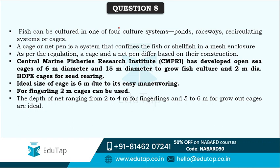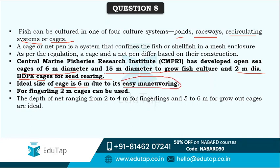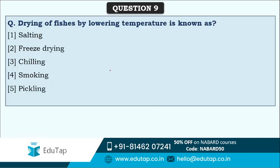Fish can be cultured in one of four culture systems: ponds, raceways, recirculating systems, or cages. Cages are net pens or mesh enclosures that confine fish. According to CMFRI, they have developed open sea cages of six meter diameter and 15 meter diameter to grow fish culture. For seed rearing, two meter diameter HDPE cages should be used. The ideal size is six meters because it is easy to maneuver cages of that size; for fingerlings, two meter cages can be used.